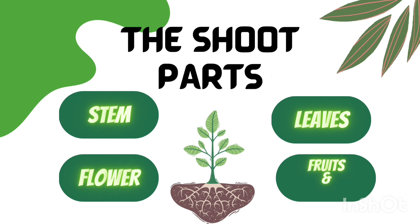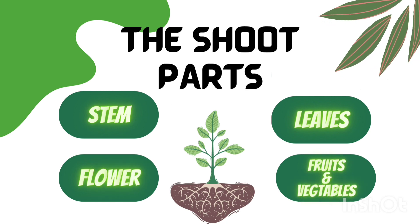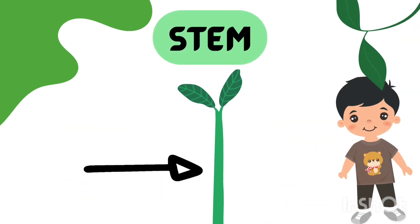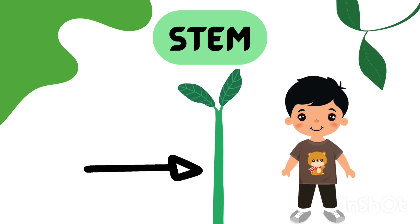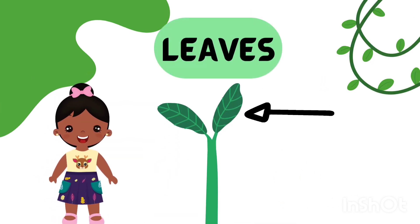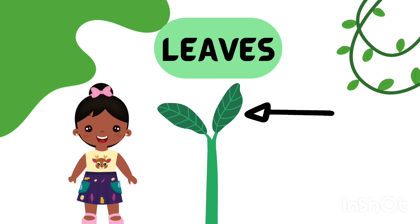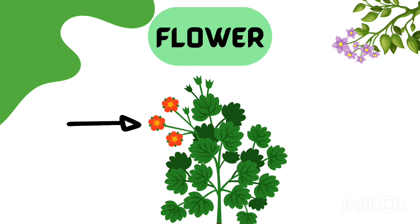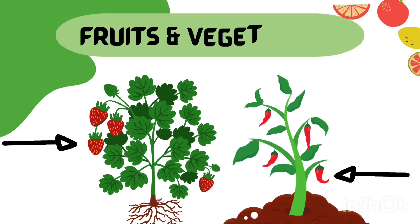The shoot consists of different parts which are stem, leaves, flower, and fruits and vegetables.